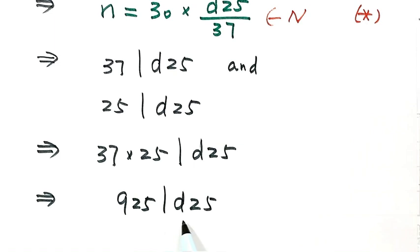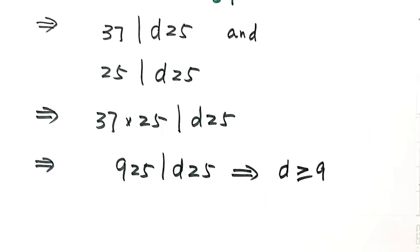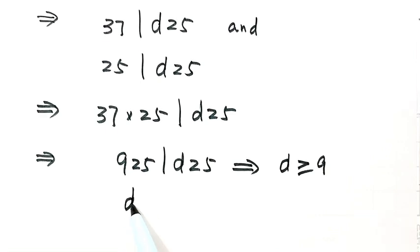Then from this result, that means d is greater than or equal to 9. But because d is a single digit number, d is less than or equal to 9.